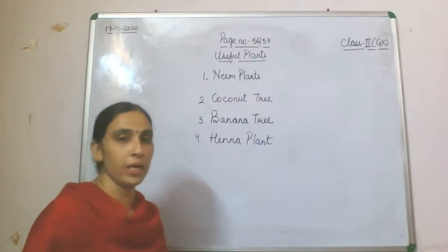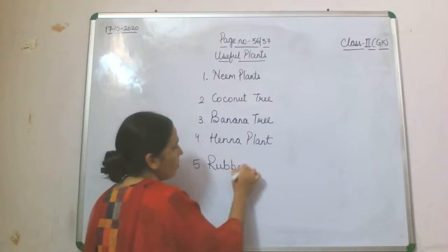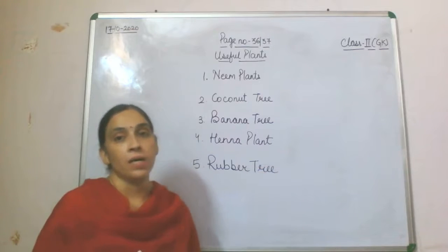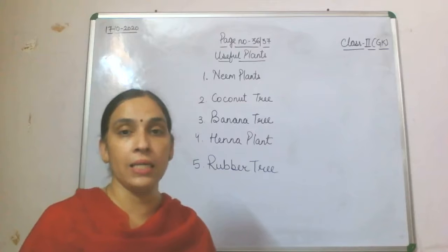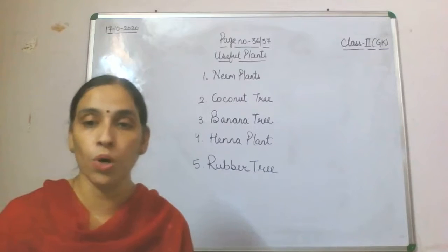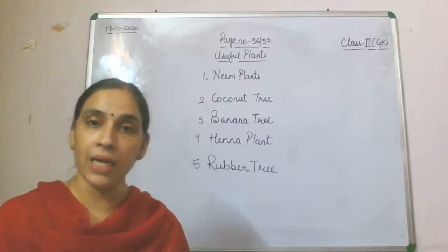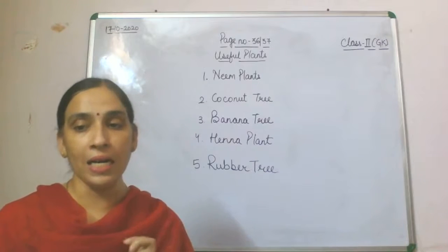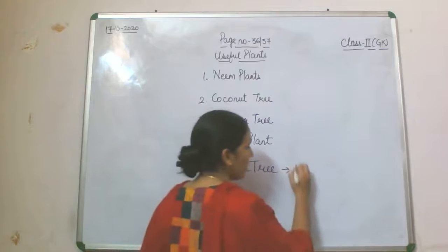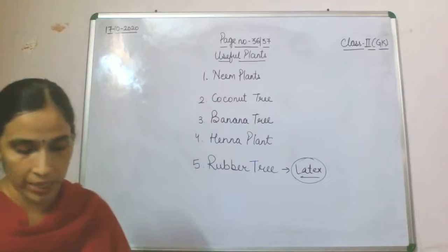The last tree we are going to discuss is the rubber tree. As I mentioned in the chapter on different landforms, we find different medicinal plants and the rubber tree in forests. The rubber tree keeps releasing a fluid called latex, which is used to make tires, shoes, shoe soles, and even rubber balls. This latex is the liquid that comes out of the rubber tree and is used to make many more things.